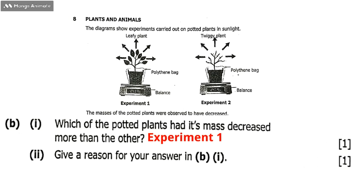It has broader leaves, so since it has broader leaves, that means there will be a lot of loss of water happening. If that's the case, then Experiment 1 will lose more water compared to Experiment 2 because of the broader leaves.